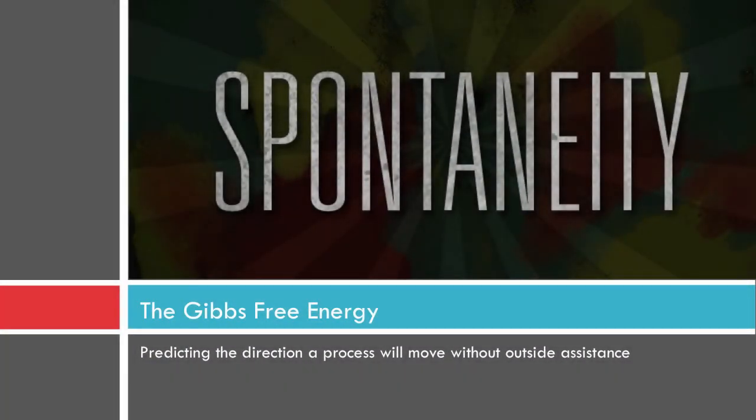Hi chem students, we're going to talk about spontaneity and how finding a new type of energy, the Gibbs free energy, will help us predict which way a reaction will move. It'll be a lot easier than trying to do so with a whole bunch of different variables, so let's see how that all fits together.